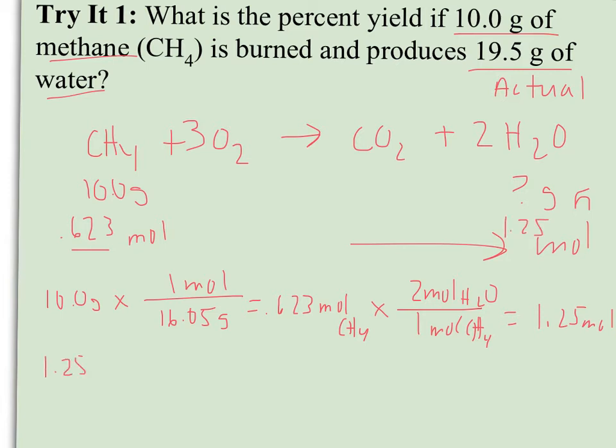And 1.25 moles of water then in grams, we know that water has a molar mass of 18.02 grams per mole. Probably have that memorized by now. So I would expect 10 grams of methane to be able to produce 22.45 grams of water.